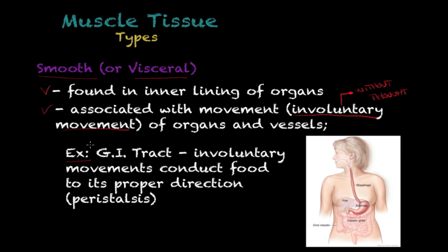An example of involuntary movement is in the gastrointestinal tract, where involuntary movements conduct food in the proper direction. You do not think in order for food to travel from your esophagus to your stomach, and from your stomach to your intestines, and so on. This type of muscle movement is called peristalsis.